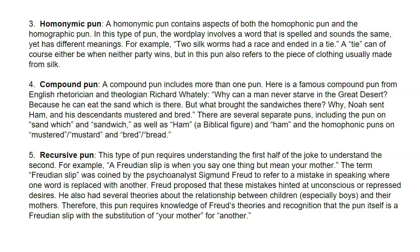A persuasive pun requires understanding the first half of the joke to understand the second. Example: 'A Freudian slip is when you say one thing but mean your mother.' The term Freudian slip was coined by Sigmund Freud to refer to a speaking mistake where one word is replaced with another, hinting at unconscious desires. Since Freud had theories about children and their mothers, this pun requires knowledge of Freud's theories and recognizes the pun itself as a Freudian slip.